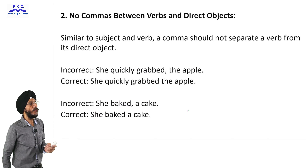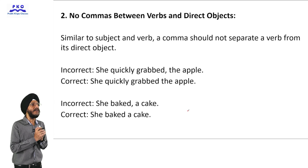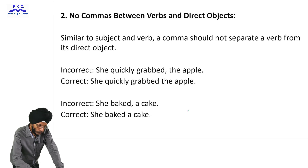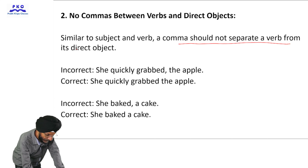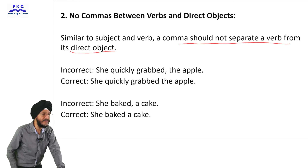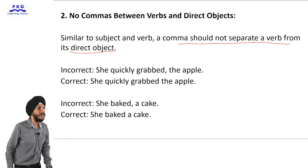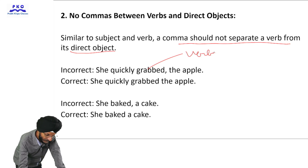Next: no commas between verbs and direct objects. A comma should not separate a verb from its direct object. For example: 'She quickly grabbed the apples.' Here, 'grabbed' is the verb and 'apples' is the direct object.